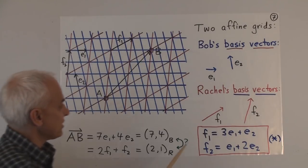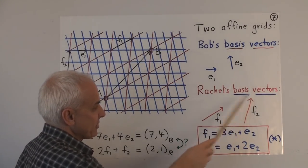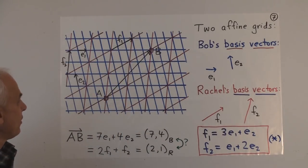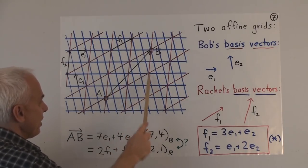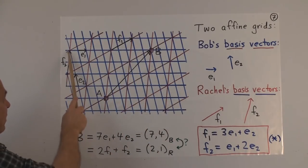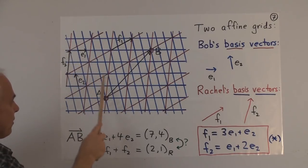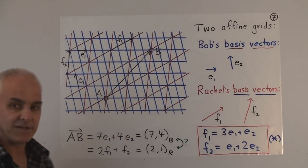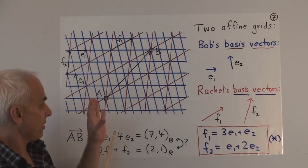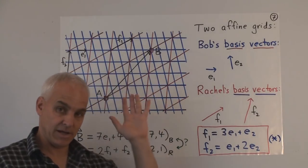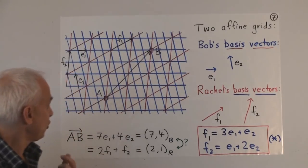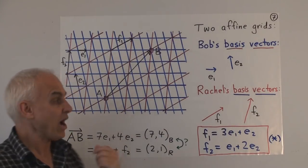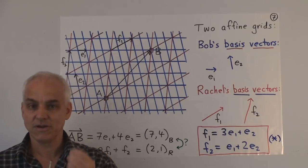Also visible is a red grid plane — this is Rachel's grid plane, with red lines forming one family and another family. Her basis vectors are F1 in one direction and F2 in another direction. You can see they're different sizes. Each of Bob and Rachel are going to look at this plane in a different way. If we have two points A and B, then Bob and Rachel are going to describe the vector between these two points in two different ways.